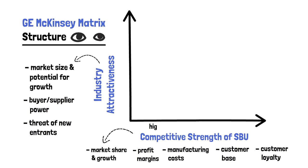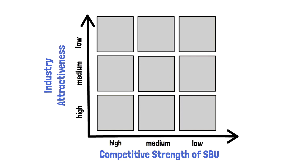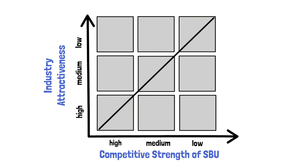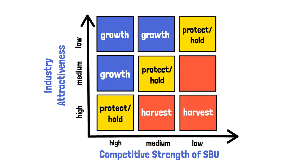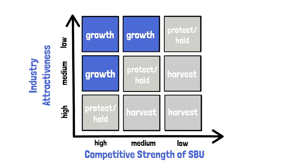Each axis has three score levels: high, medium, and low. This creates a matrix with a total of nine cells. The nine cells are then divided by a diagonal line running from the bottom left to the top right of the matrix. When a product is placed on the matrix, its position relative to the diagonal line determines the strategy that should be used. The cells above the diagonal are part of the growth strategy, the ones on the diagonal belong to the protect category, and the cells below the diagonal constitute the harvest category. The position a business occupies on the matrix drives the future strategy.